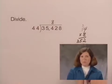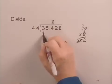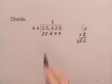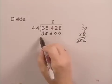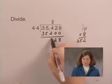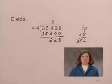We put our product 352, but this is really 800, so we need 352 hundreds, or 35,200 to subtract from the dividend. When we subtract, we have 228 still left to divide by 44.